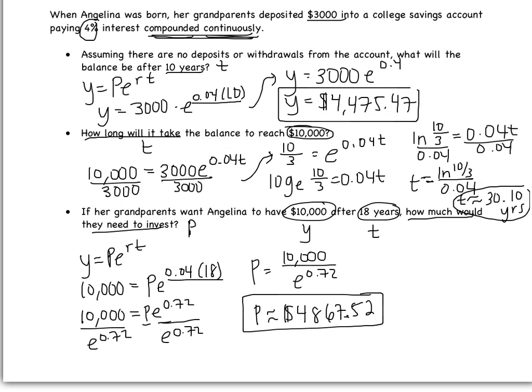So Angelina's grandparents would need to invest $4,867 for her to have $10,000 after 18 years. None of the solving today is new — the only new part is setting up the problems. The key is thinking about what you're solving for, what information you have, and sometimes you'll need to manipulate the equation to decide whether to convert to log form, take the log of both sides, or just divide.